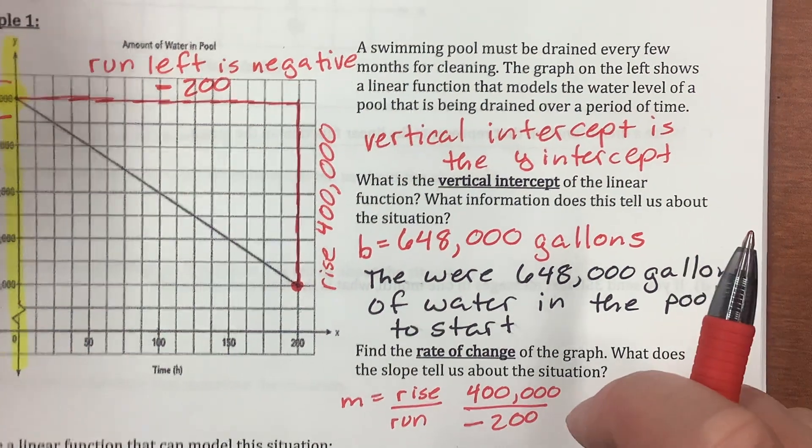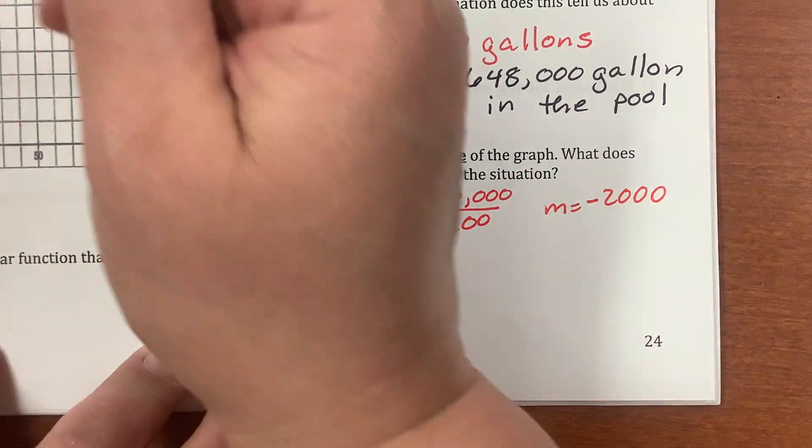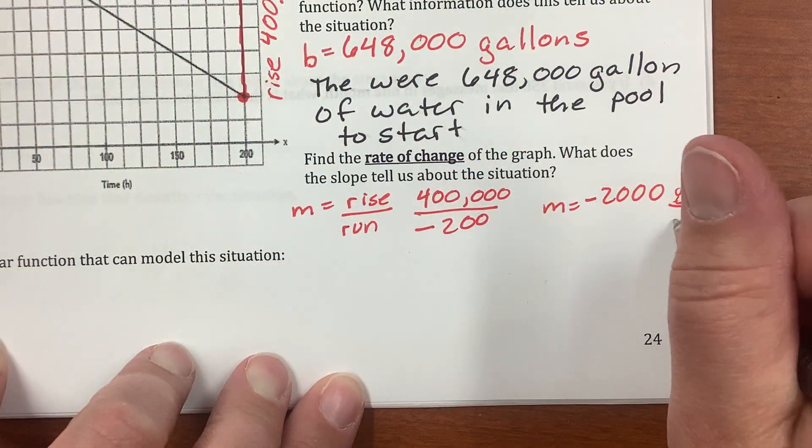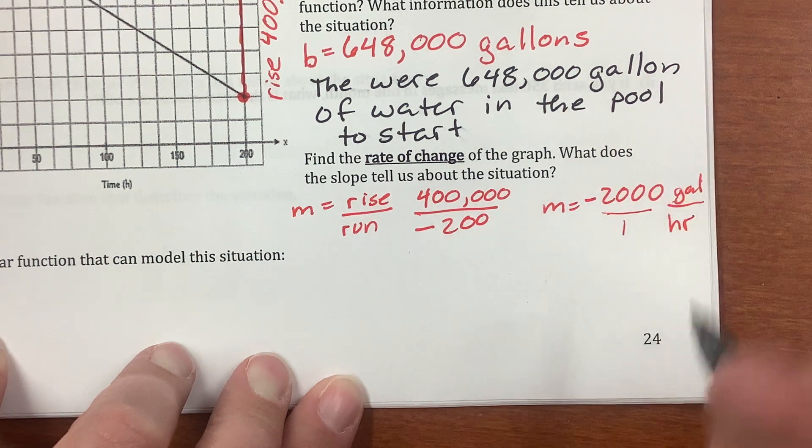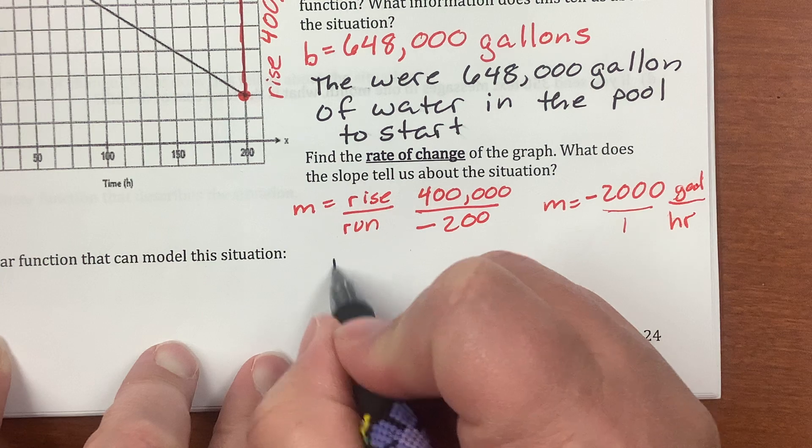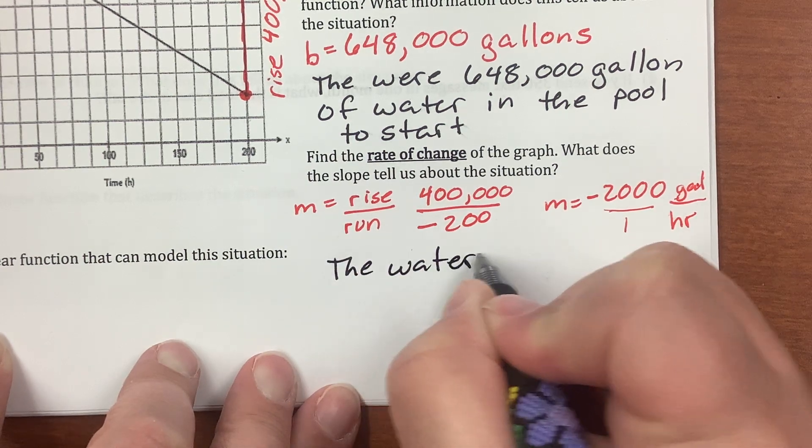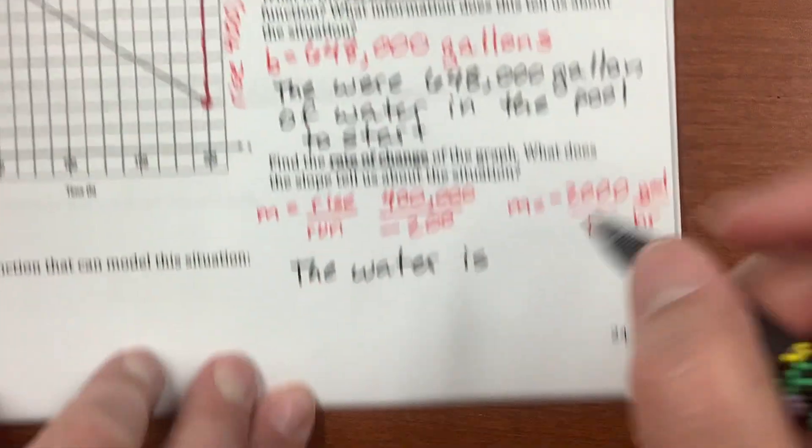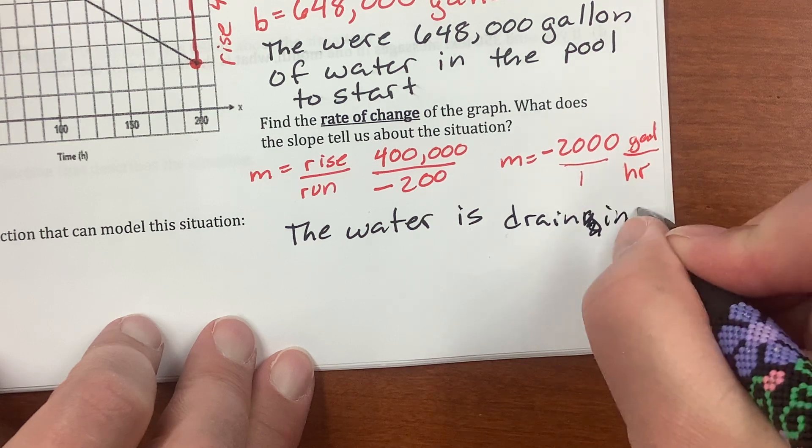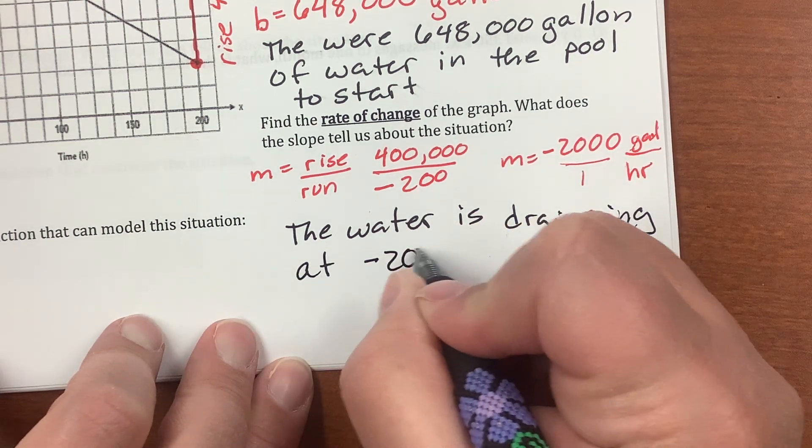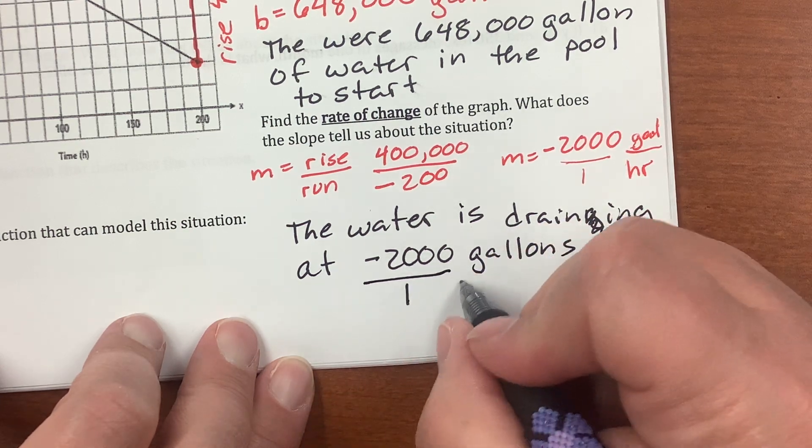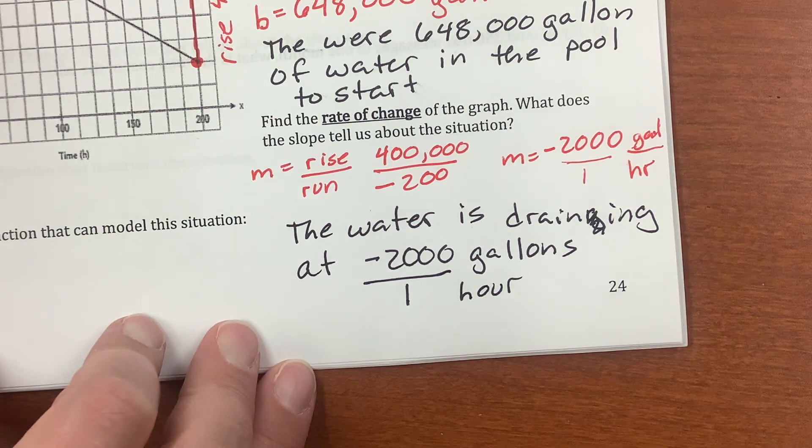And what does that mean? Well, if you put in the units, you could figure it out. Gallons of water is y. So, gallons over time in hours. So, this is hours. So, that's over one hour. So, negative 2,000 gallons in one hour. What does that mean? The water is draining at negative 2,000 gallons per hour.